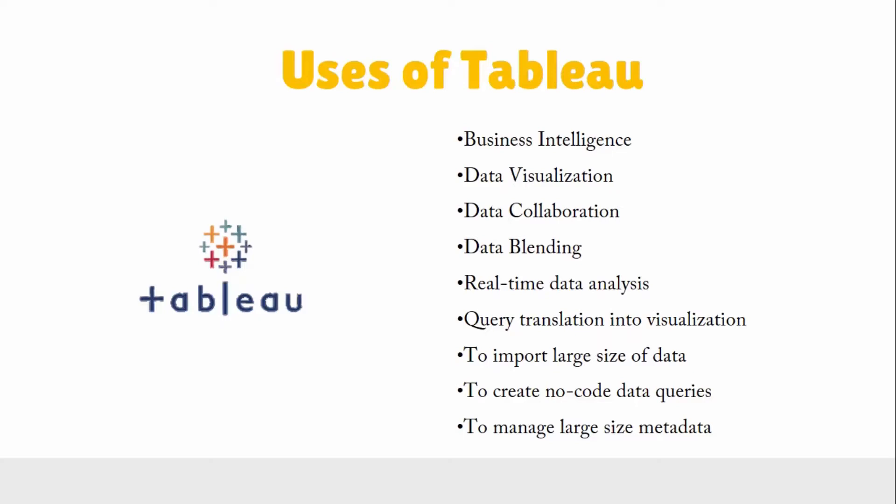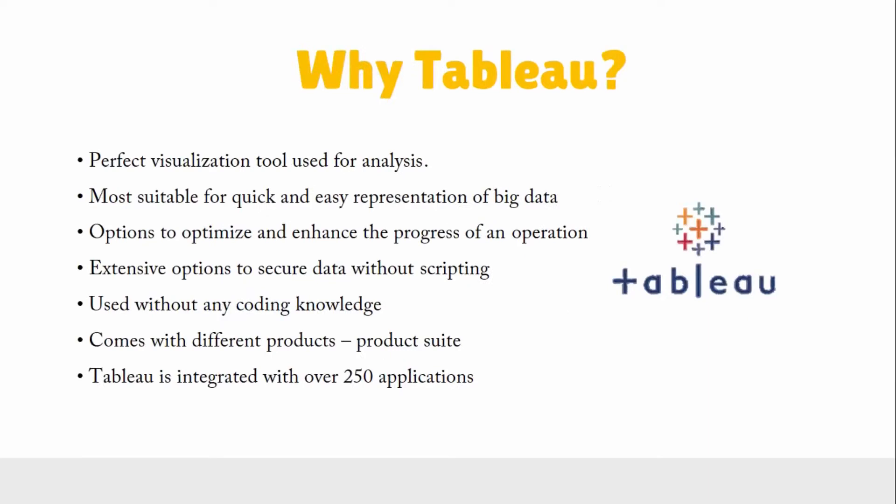Tableau has an effective way of dealing with metadata. Metadata is the data about data — for a table, that includes the size of the table, its name, how many rows and columns it has, how many duplicate or null values it contains, and the data types of its columns. If the metadata is in humongous amounts, you can still use Tableau to manage it.